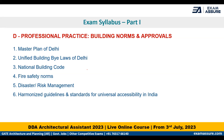Under professional practice, it is more about building norms, approvals, and bylaws. Since this exam is conducted by DDA, knowing the master plan of Delhi and the building bylaws in Delhi is important. Other very important topics include the National Building Code, fire safety norms, and universal accessibility guidelines. You can refer to the CPWD guidelines on universal design, which are available online.